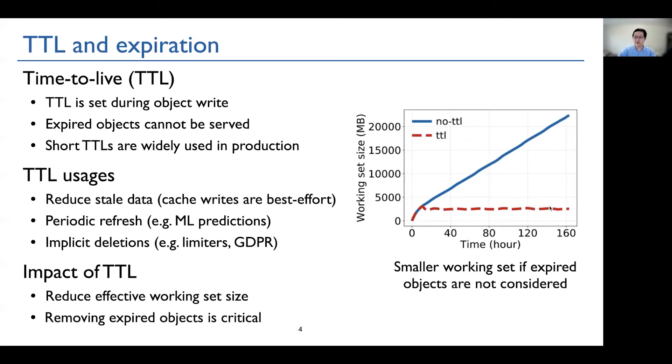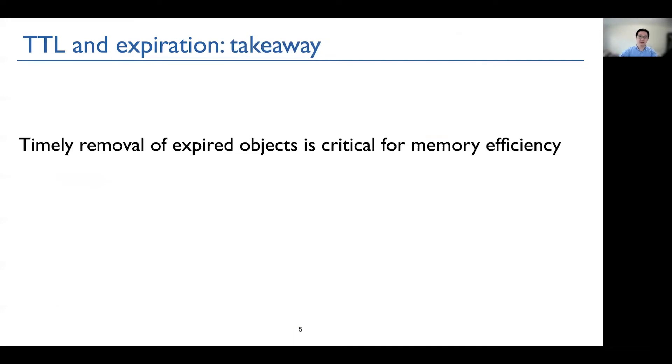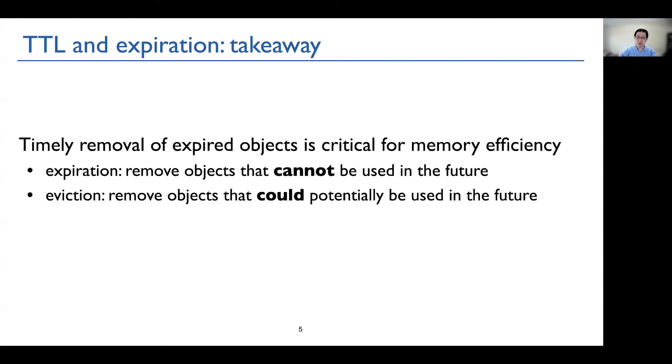In other words, if we can remove expired objects in time, we probably do not need a lot of evictions. As a takeaway of these slides, we observe that timely removal of expired objects is very critical for cache memory efficiency. Because expiration removes objects that cannot be used in the future, while eviction removes objects that could potentially be used in the future.